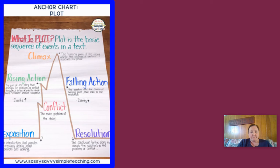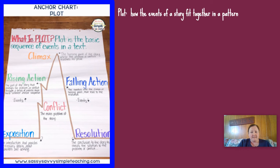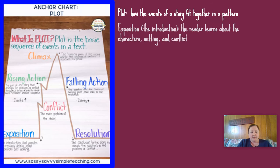In your input for today, you have this anchor chart on plot. Let's go through the different aspects of plot together. Plot is how the events of a story fit together in a pattern — how one thing will lead to another. The exposition, or the introduction, is at the beginning of a story in which the reader learns about the character, setting, and conflict of the story.